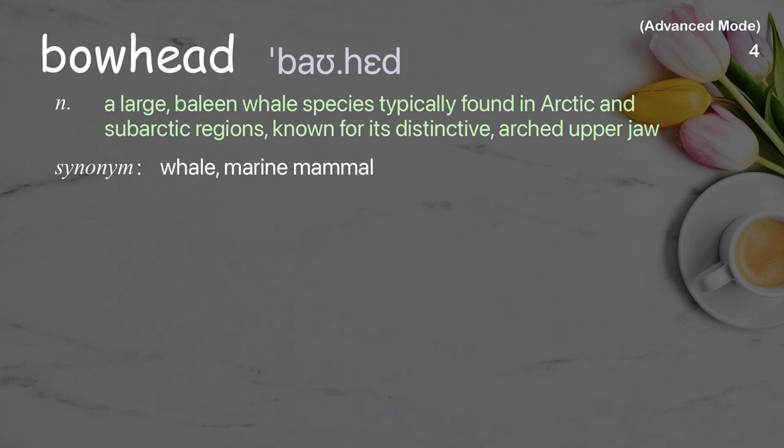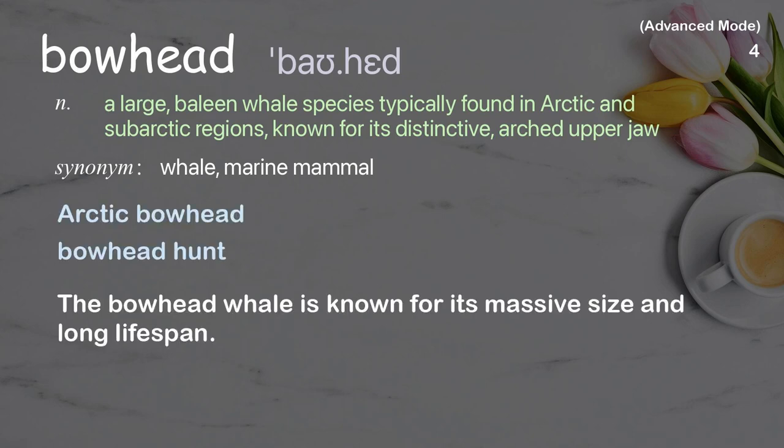Bowhead: a large baleen whale species typically found in arctic and subarctic regions, known for its distinctive arched upper jaw. Examples: arctic bowhead, bowhead hunt. The bowhead whale is known for its massive size and long lifespan.